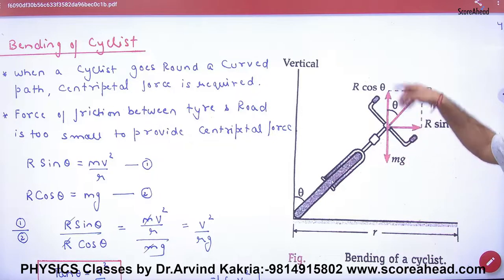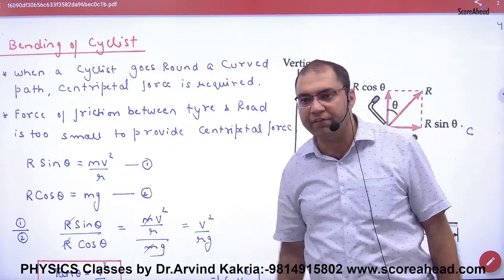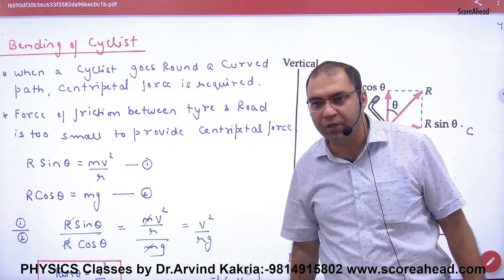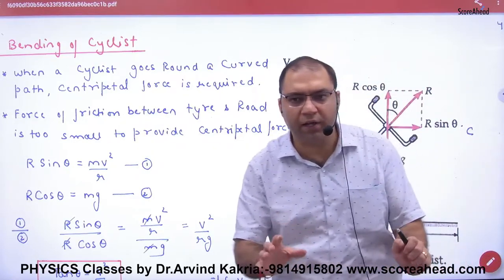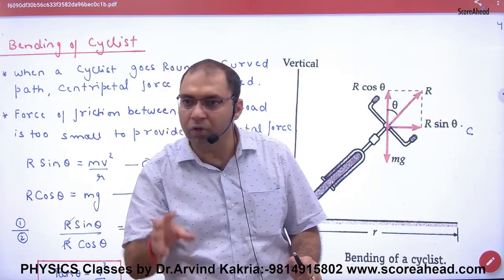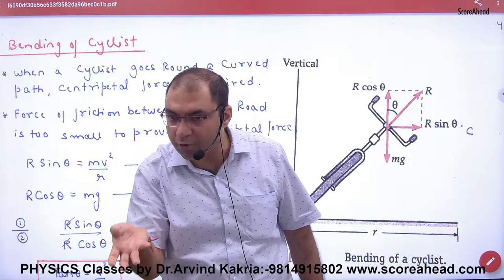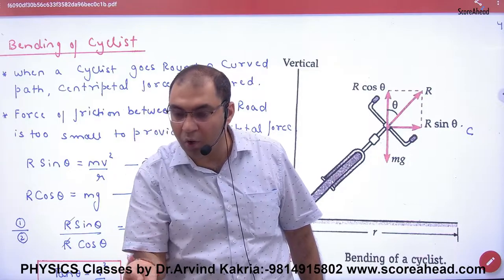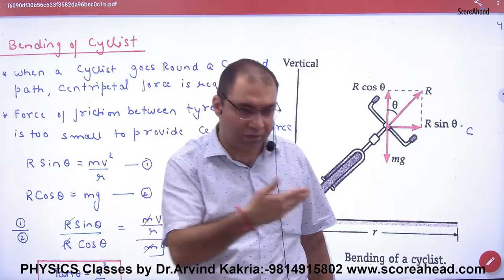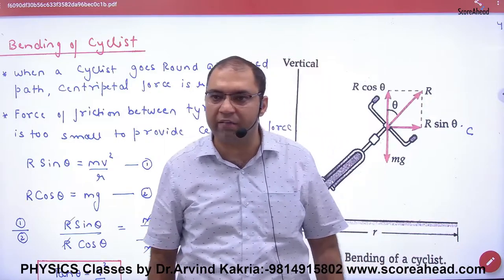Now the cycle is not moving up or down — it is stable. So R cos theta is equal to mg. That is the first equation: R cos theta = mg. Second, if the cycle wants to move in a circle, what does it need? Centripetal force, directed toward the center.